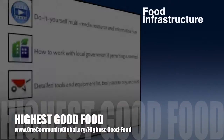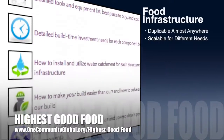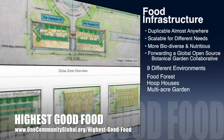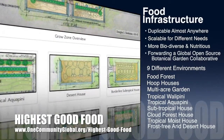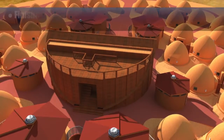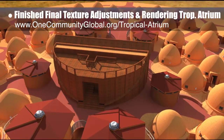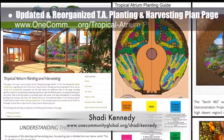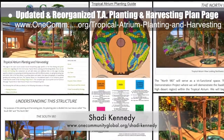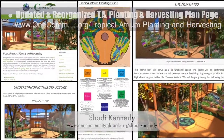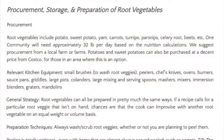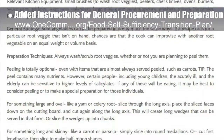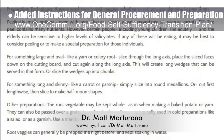One Community's approach to highest good food is duplicable almost anywhere, scalable for different needs, more biodiverse and nutritious, part of a global open source botanical garden collaborative, and includes nine different free shared duplicable growing environments. This week the core team finished final texture adjustments and rendering for the tropical atrium, updated and reorganized the tropical atrium planting and harvesting plan page to include all images created by artist and graphic designer Shoddy Kennedy, and added instructions for general procurement and preparation of root vegetables as suggested by naturopathic Dr. Matt Martorano.